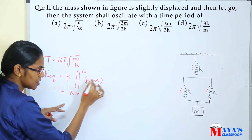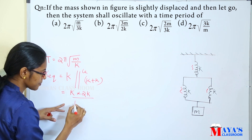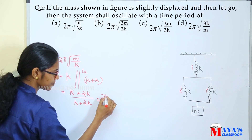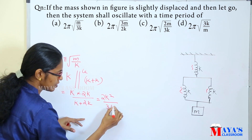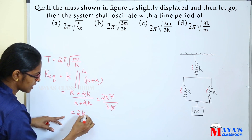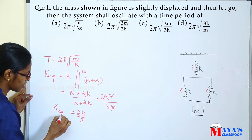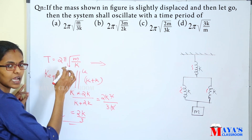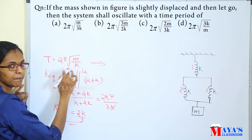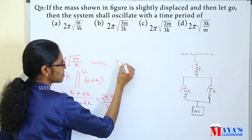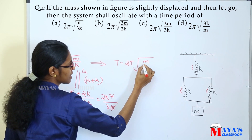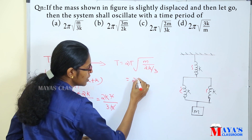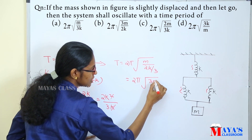If it is equal to 2k, then we can convert these two springs into three springs. So we can substitute here: t is equal to 2π into root of m divided by k. Adding the value 2k divided by 3.